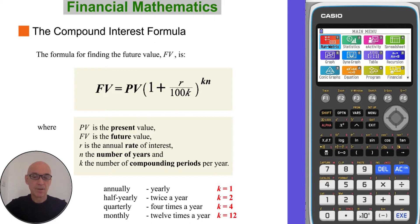If interest is compounded annually or yearly, then K would equal 1. If interest is compounded half yearly, in other words twice a year, then K would equal 2. If interest is compounded quarterly, that's 4 times a year, then K will equal 4. And if interest is compounded monthly, that's 12 times a year, then K will equal 12.